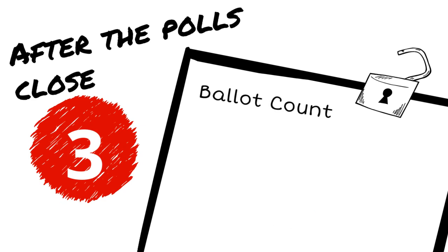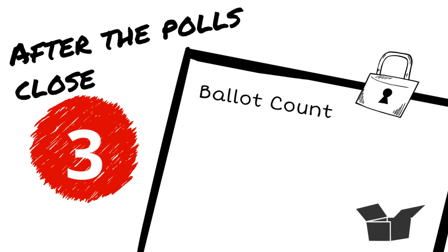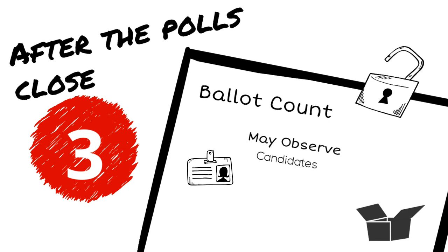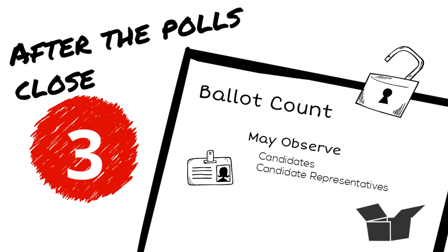After the polls close, election officials begin the ballot count. Candidates and candidate representatives, like scrutineers or the official agent, may observe the ballot counting process. The local Chief Election Officer will provide you with information about observing the ballot count.